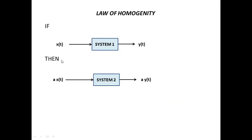The law of homogeneity: if x(t) is applied to a system and produces output y(t), then if the input x(t) is multiplied by some scalar quantity a, and if the system produces an output also multiplied by a, then that system obeys the law of homogeneity. Principle of superposition takes into account both the law of additivity and the law of homogeneity.